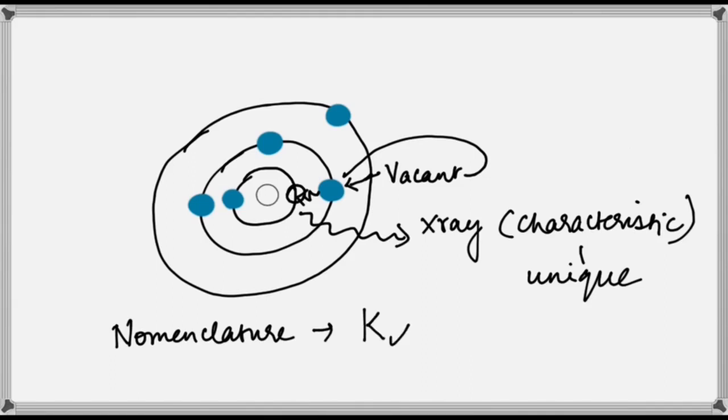For example, K-alpha, in which K represents the vacant shell and alpha represents the shell from which the filling electron has come, which is the L-shell in this case.